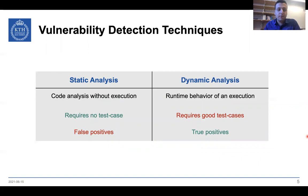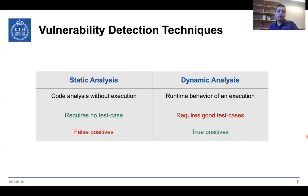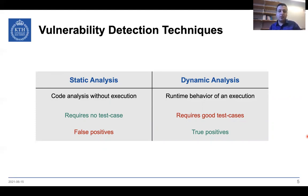To detect vulnerabilities, we can generally use either of two approaches: static analysis or dynamic analysis. In static analysis, we analyze the source code of the program or smart contracts without actually executing them. We require no test case, so it's a more convenient way to detect vulnerabilities, but it doesn't mean it's the most accurate way.